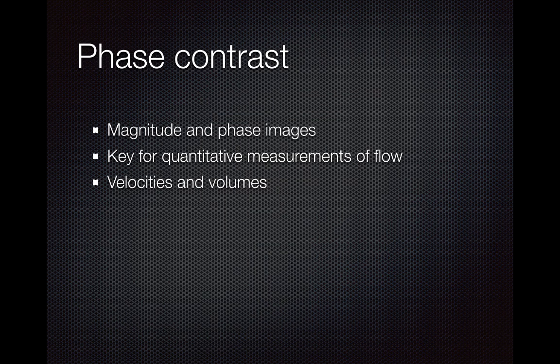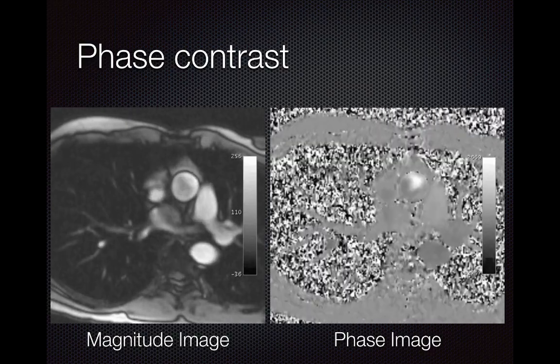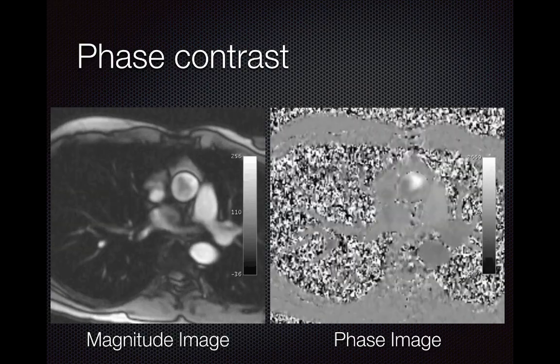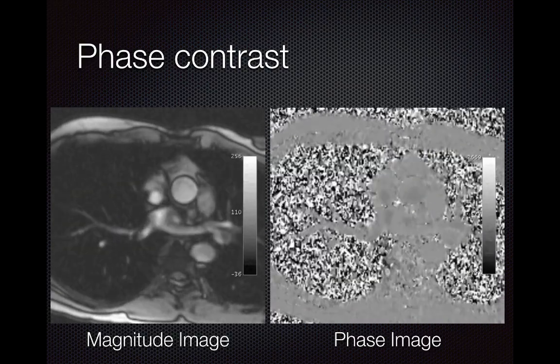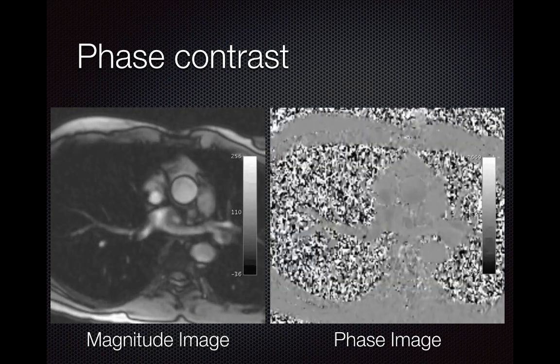Phase contrast: any time we need quantitative measurements of flow, we use phase contrast. We have a magnitude image and a phase image. The magnitude image demonstrates the anatomy, and the phase image contains the data the computer analyzes to give flow measurements. This pulse sequence is key for quantitative measurements — we can measure not only velocities but also volumes. On my YouTube channel, there is a separate lecture on how to process quantitative data for ventricular function as well as flow.